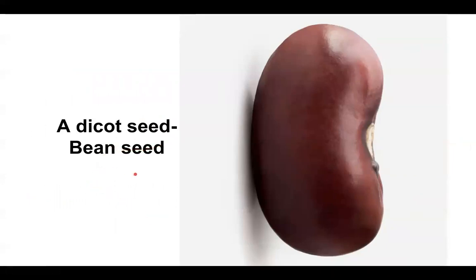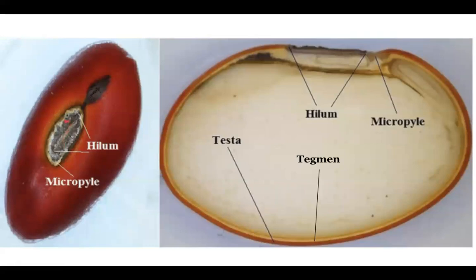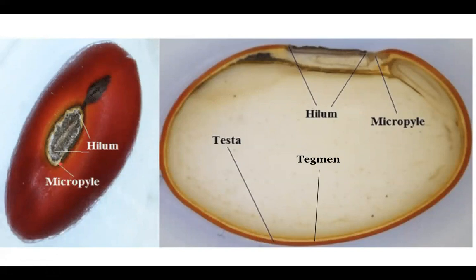In a dicot seed like a bean seed, the hilum is the point of attachment of the seed with the pod — the point where the ovule was attached to the ovary. The micropyle is the opening through which the seed respires, through which water enters during germination, and through which the pollen tube had entered the ovule to bring about fertilization. The testa is the outermost covering — in case of bean, it is the reddish-brown covering — and the tegmen is the thin papery covering inside the testa.